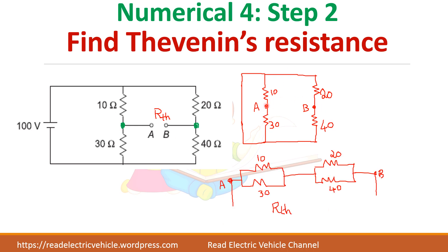Now you take these two leads. Because you want to find the resistance across A and B, from A you have 10 and 30 ohms connected together. The other end of 10 and 30 are tied together. From B, 20 and 40 ohms are going — the other end of 20 is connected to 10 ohms and the other end of 40 is connected to 30 ohms. So you connect them like this.